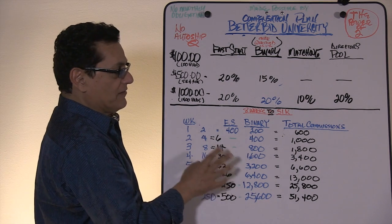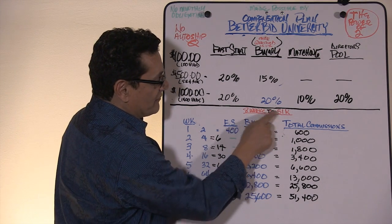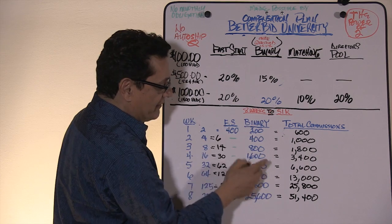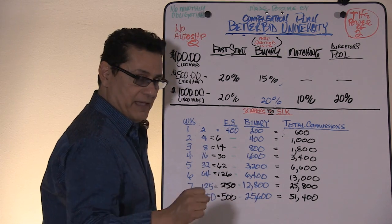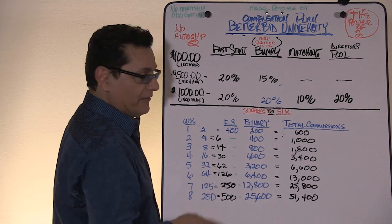And this is how the commissions work, guys. This is a running total in your commissions. So, eight weeks to 51K is realized. If you do this perfectly, we're not making any income claims. $51,000 in eight weeks.